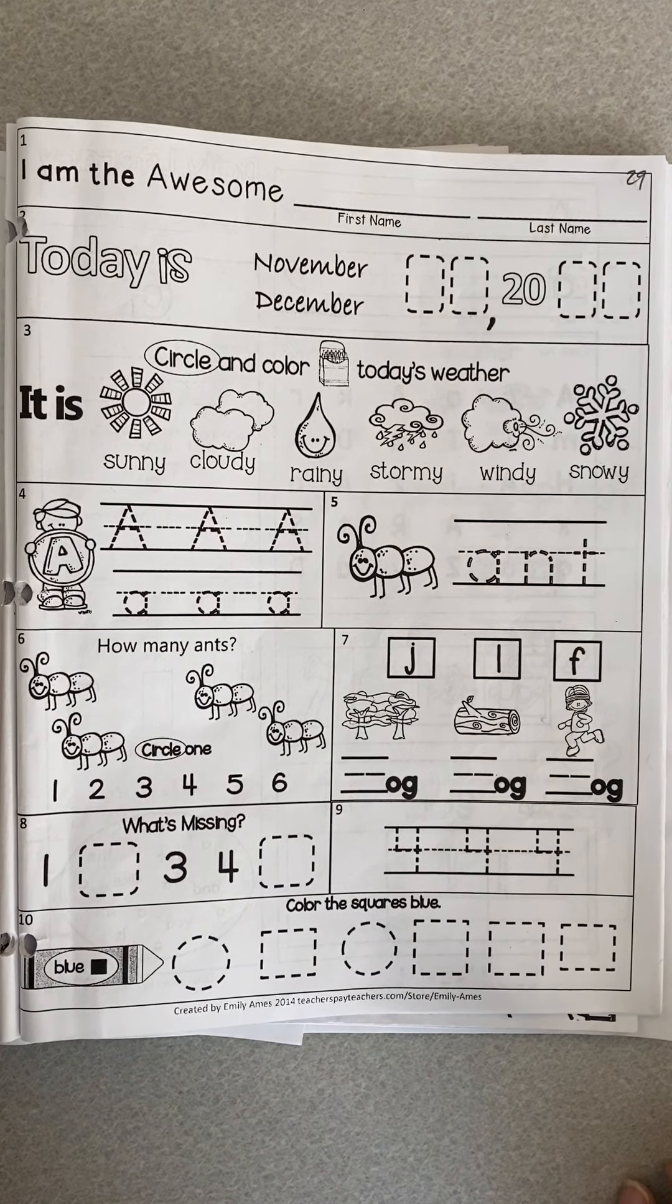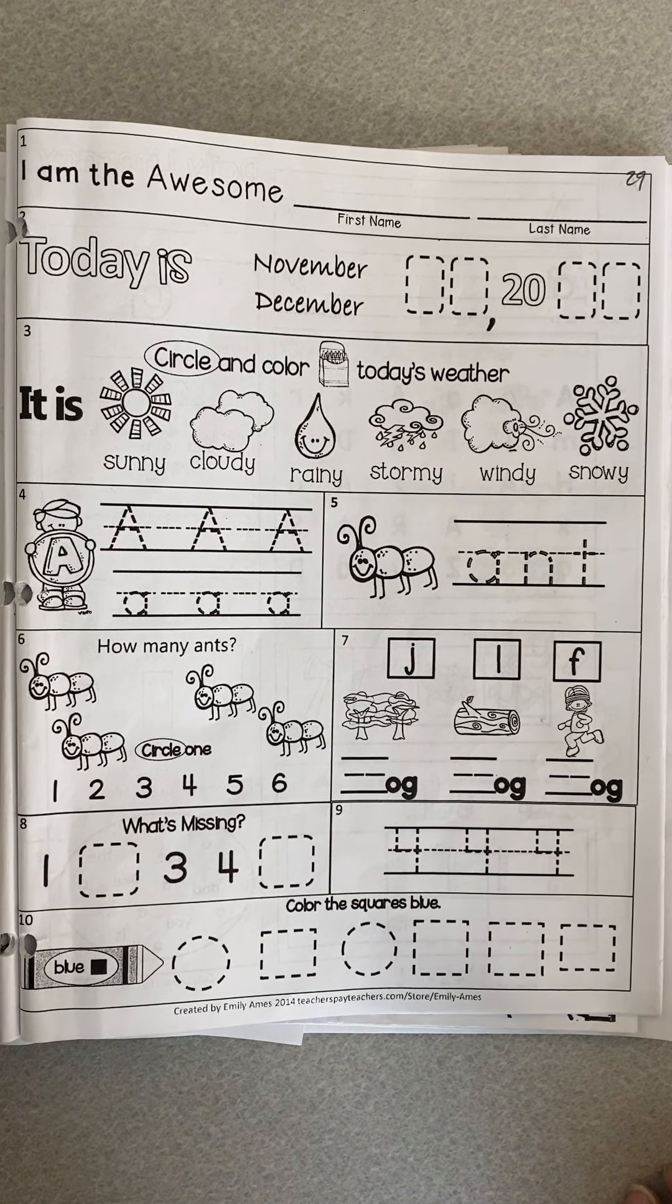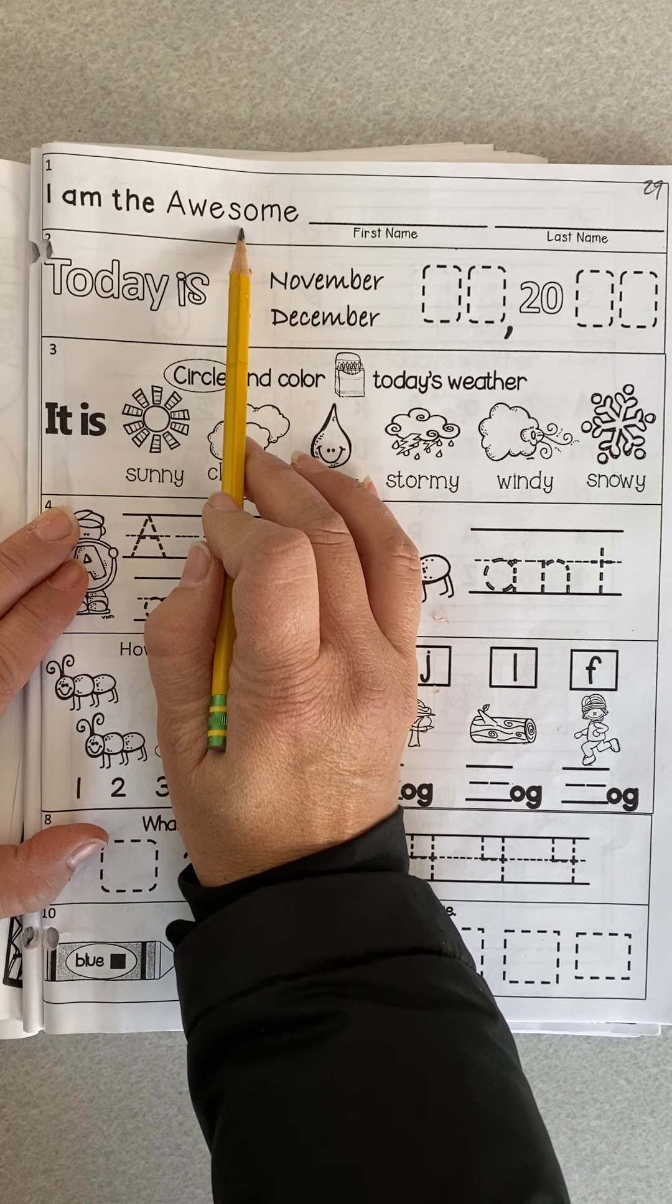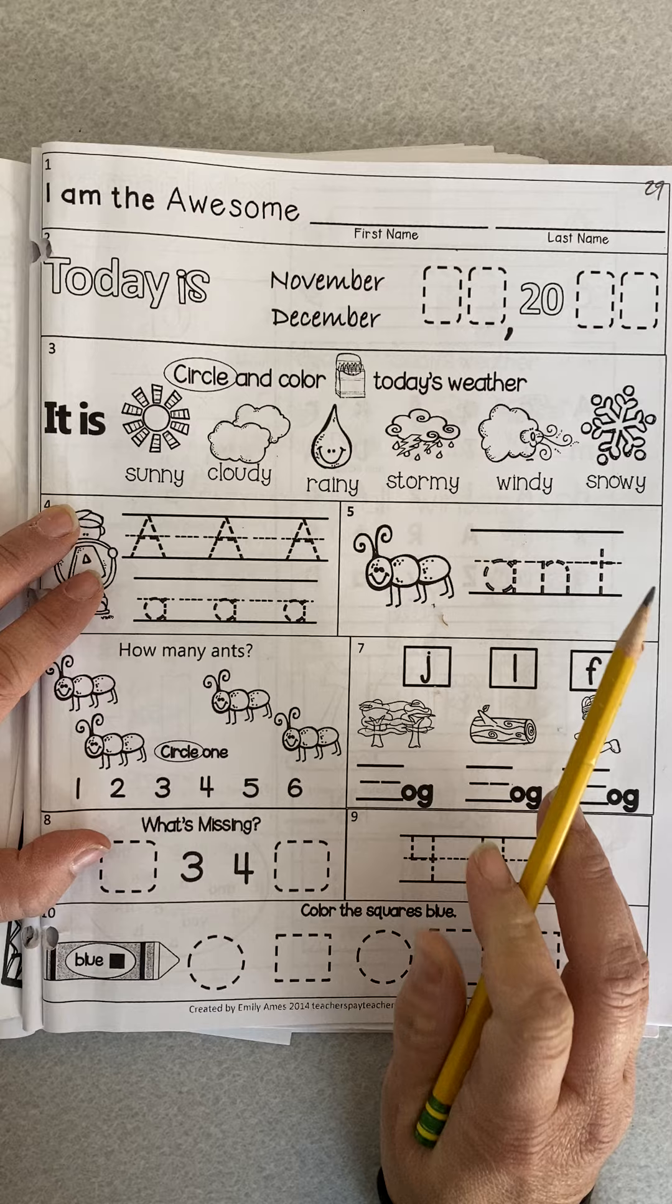Good morning, boys and girls. Today is Wednesday, November 18th, 2020. We're going to start with your morning work today. You should turn to the page that says I am the awesome, and it has A's and an ant. Do that now.